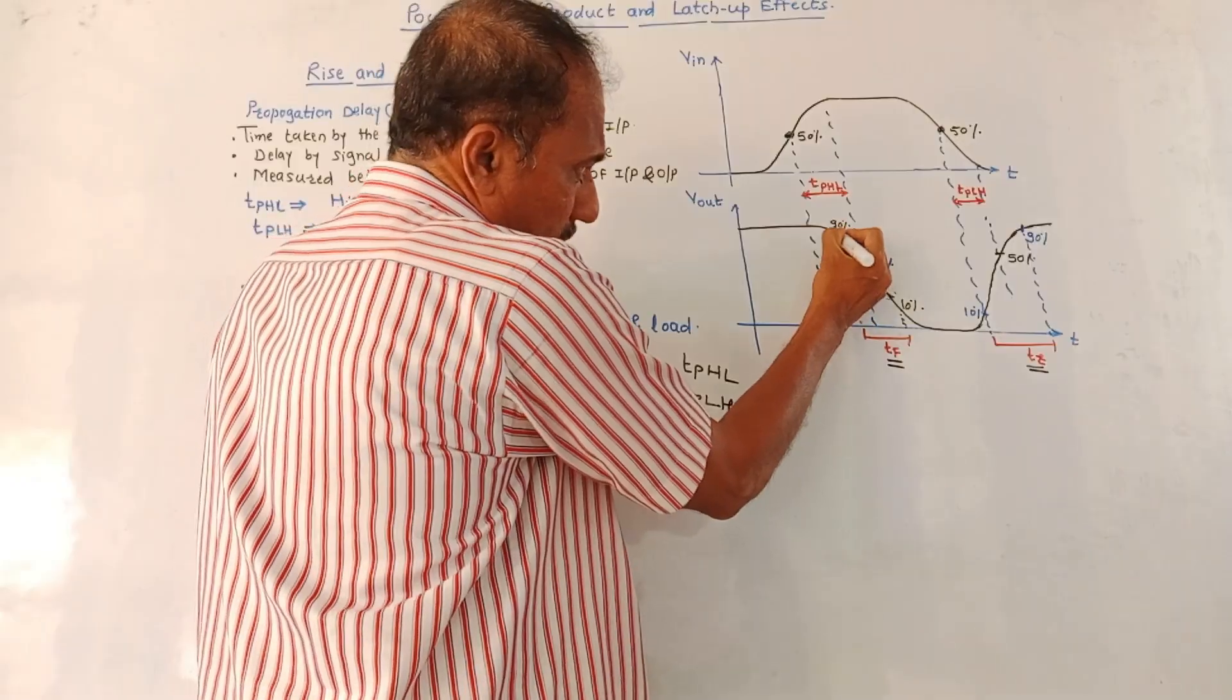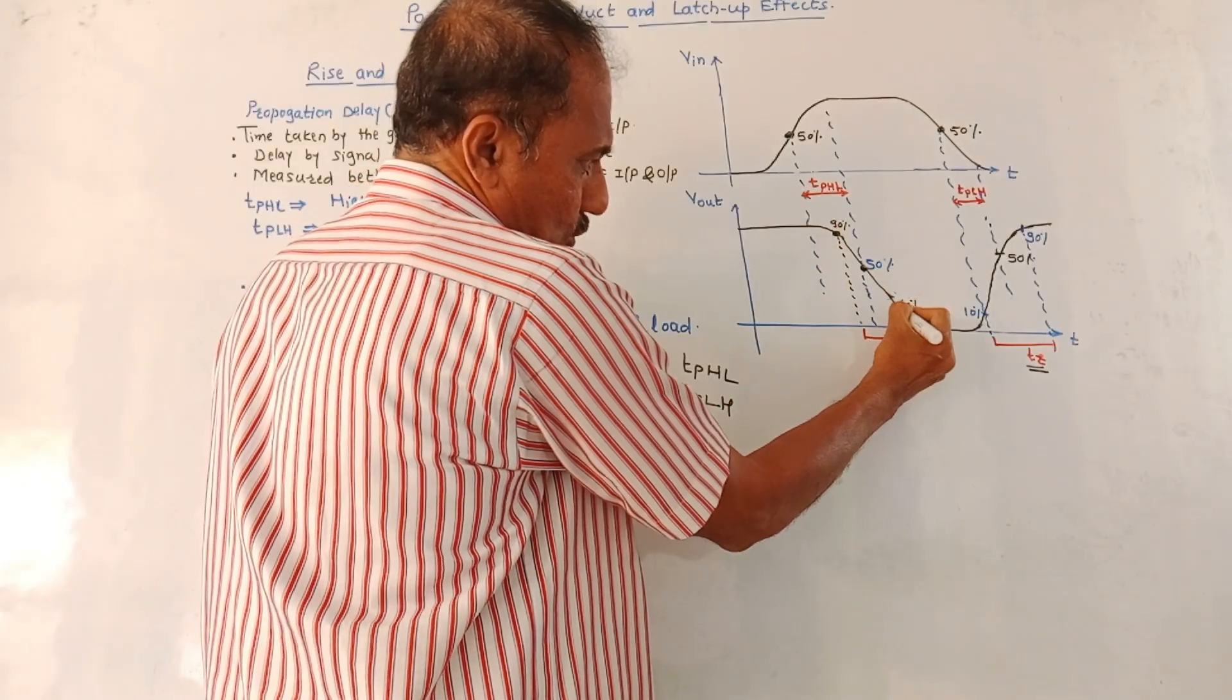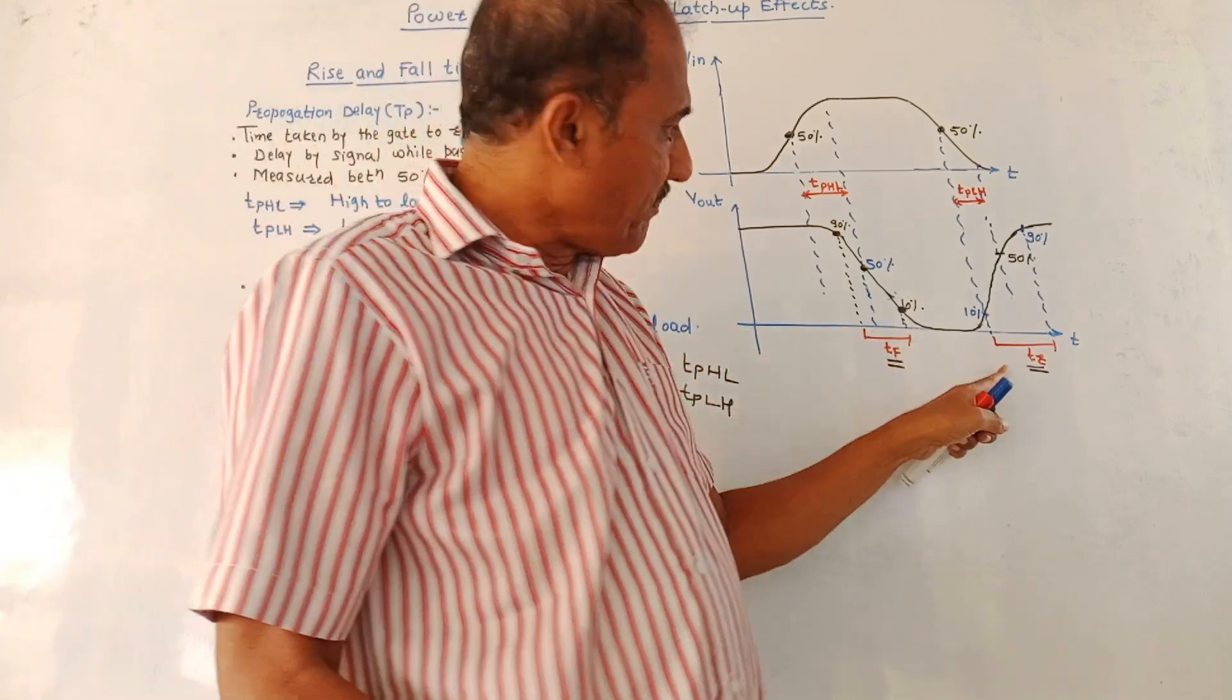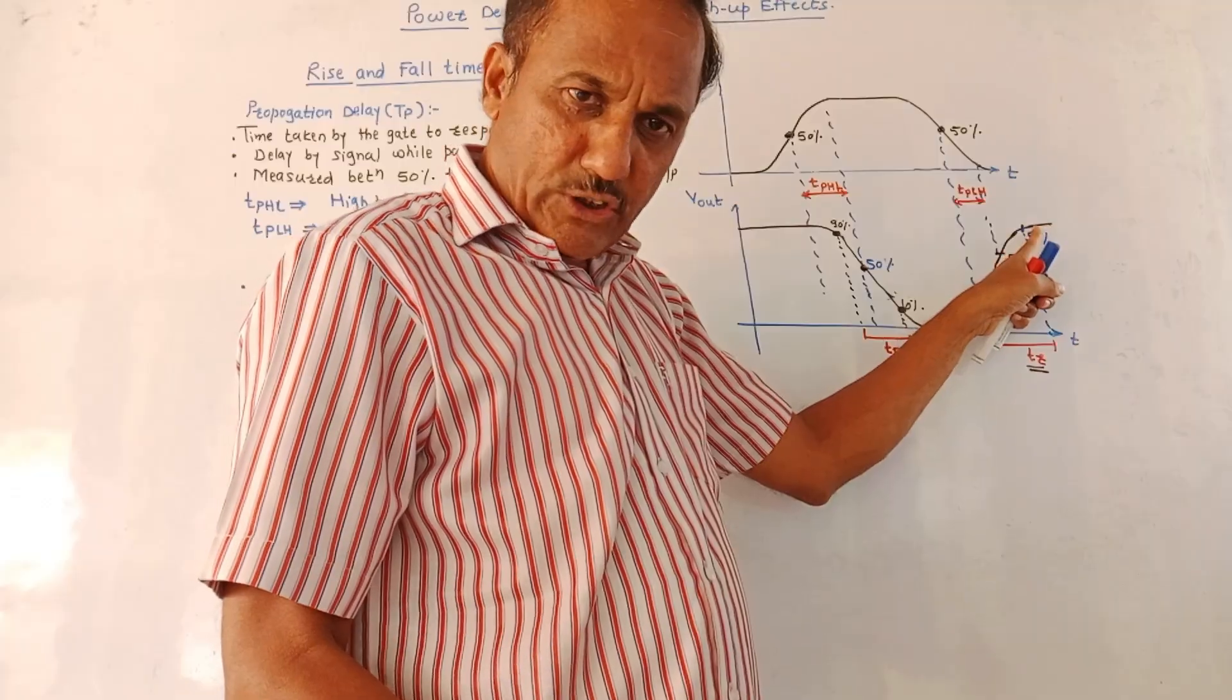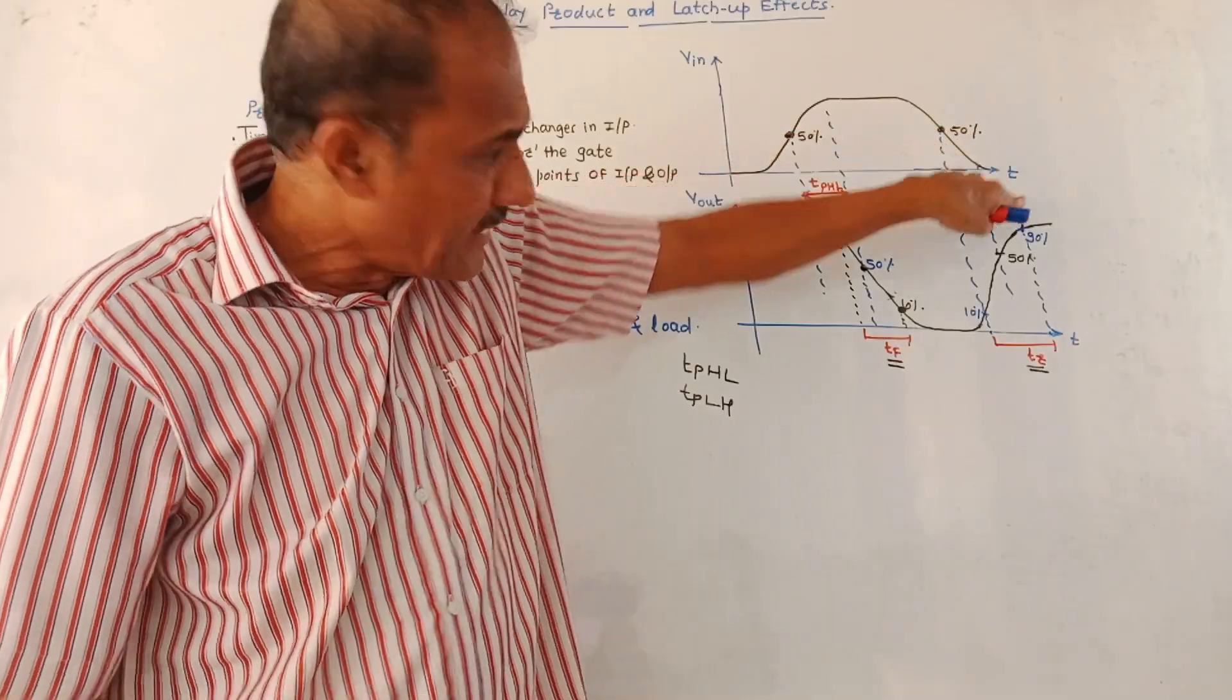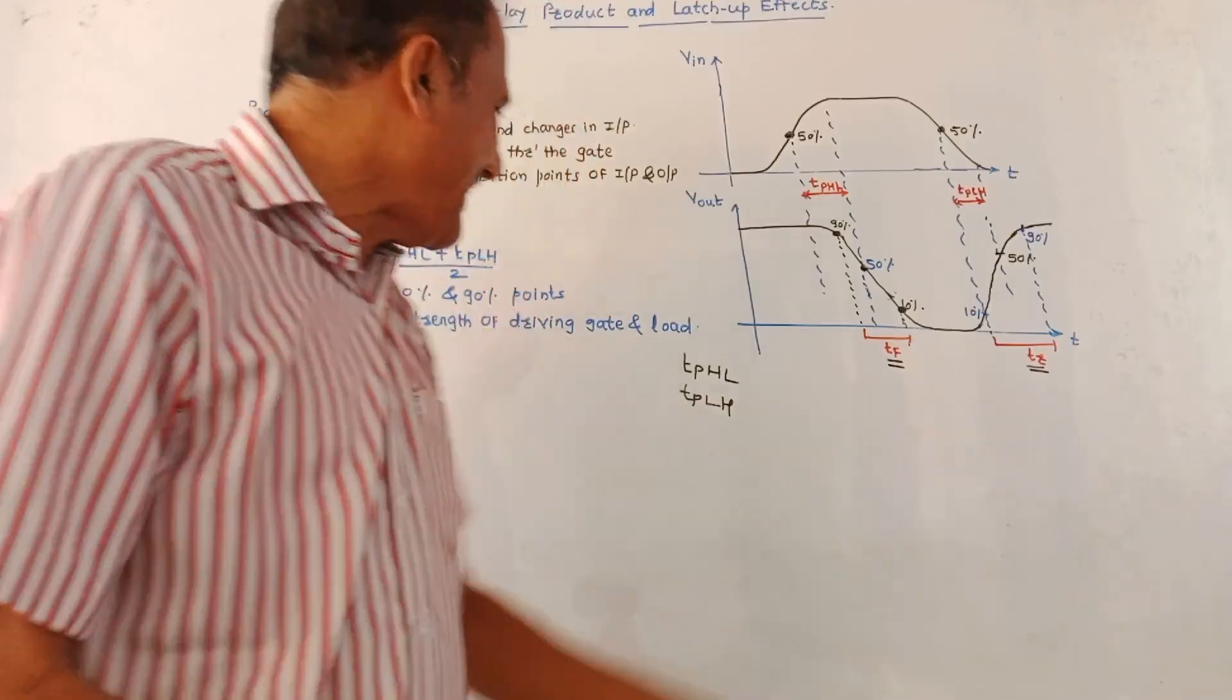As shown in this diagram, this is the output waveform. This point corresponds to 90% of the value. This point corresponds to 10% of the value. Time delay between these two is called fall time TF. Same way, this is the 10% of the output waveform and 90% of the output waveform. The time delay related to these two positions between 10% and 90%, this is the rise time TR.